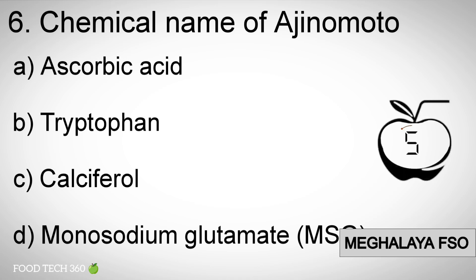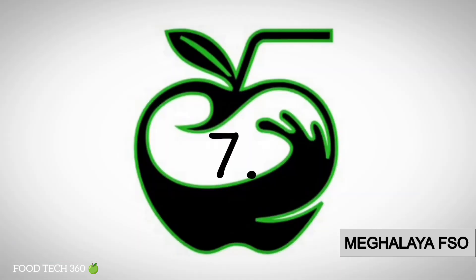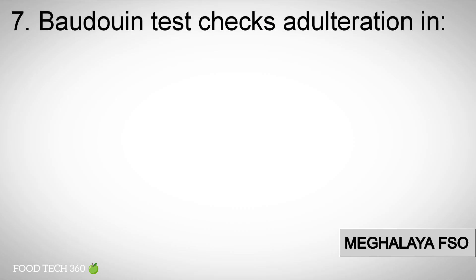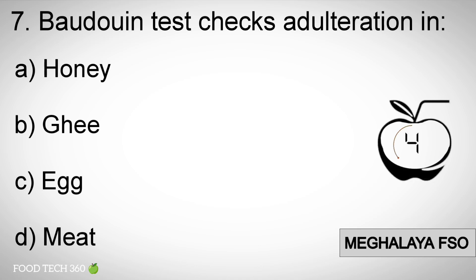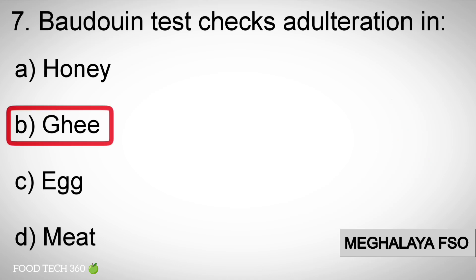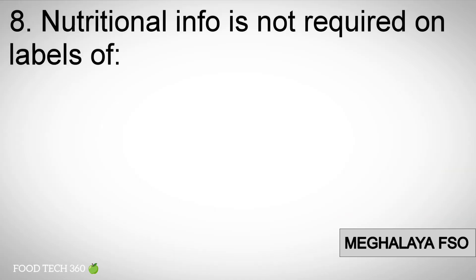Correct answer: D) monosodium glutamate (MSG). Question number 7: Baudouin test checks adulteration in — options: A) honey, B) ghee, C) egg, D) meat. Correct answer: B) ghee.